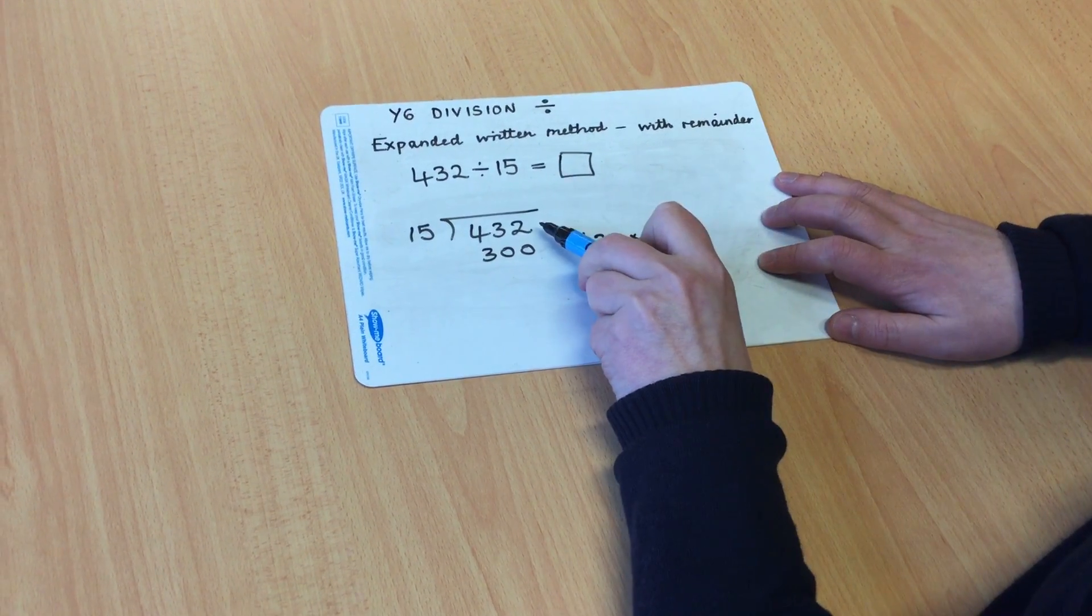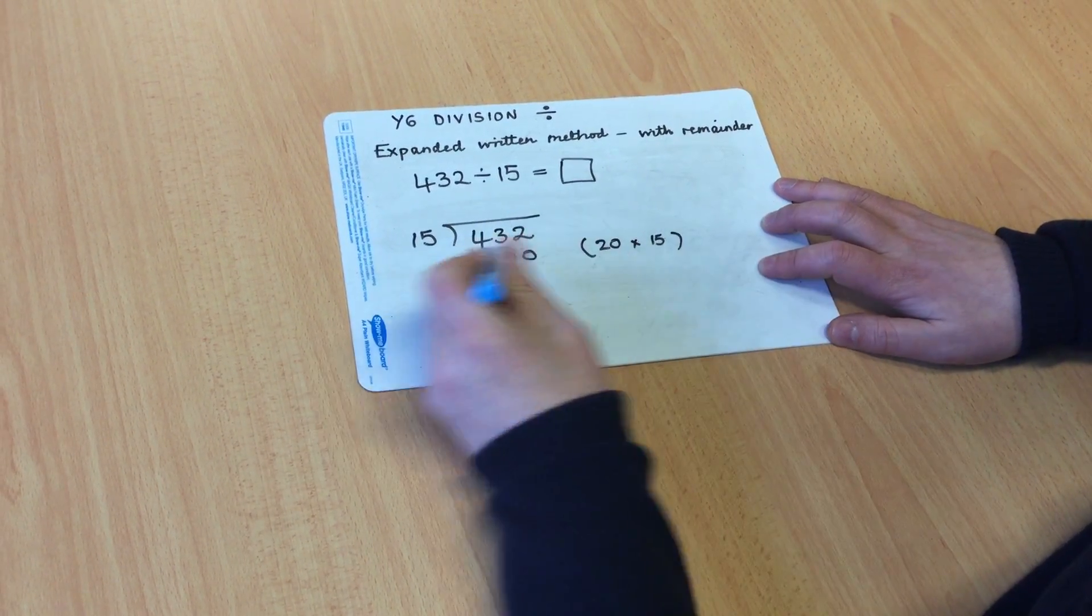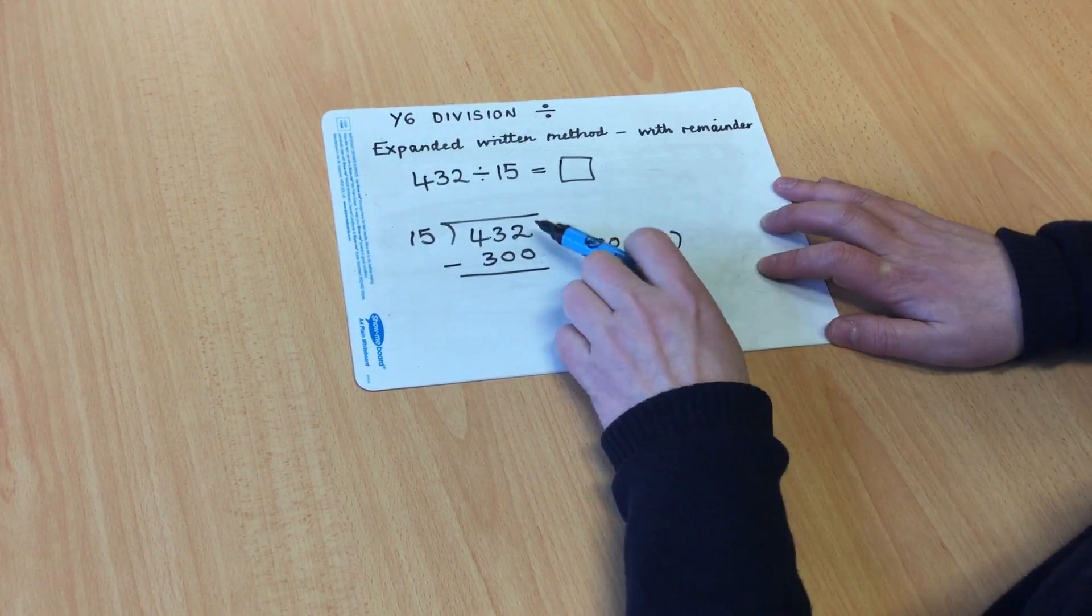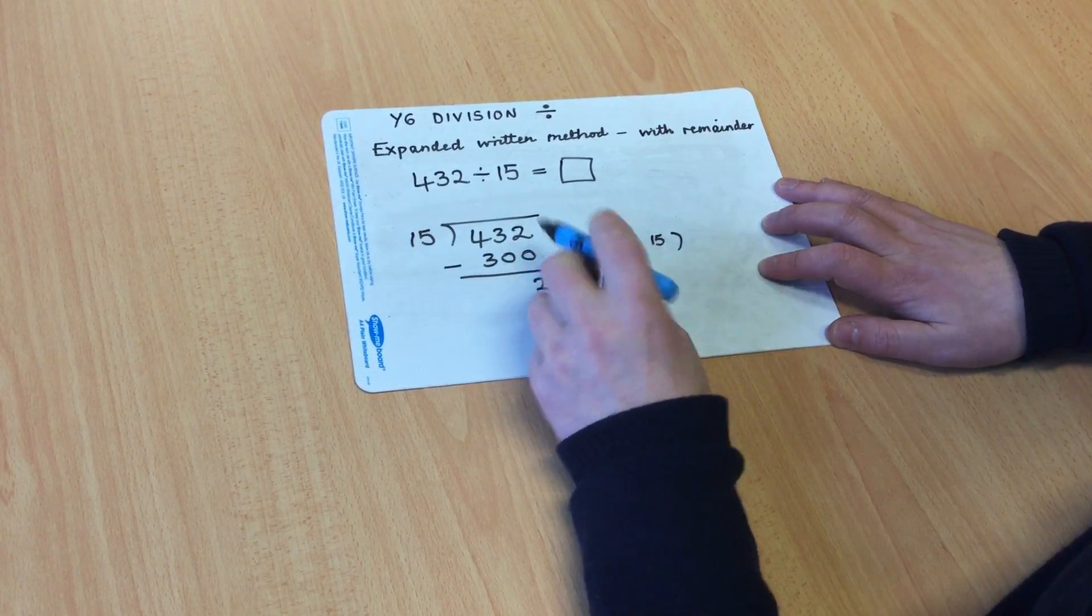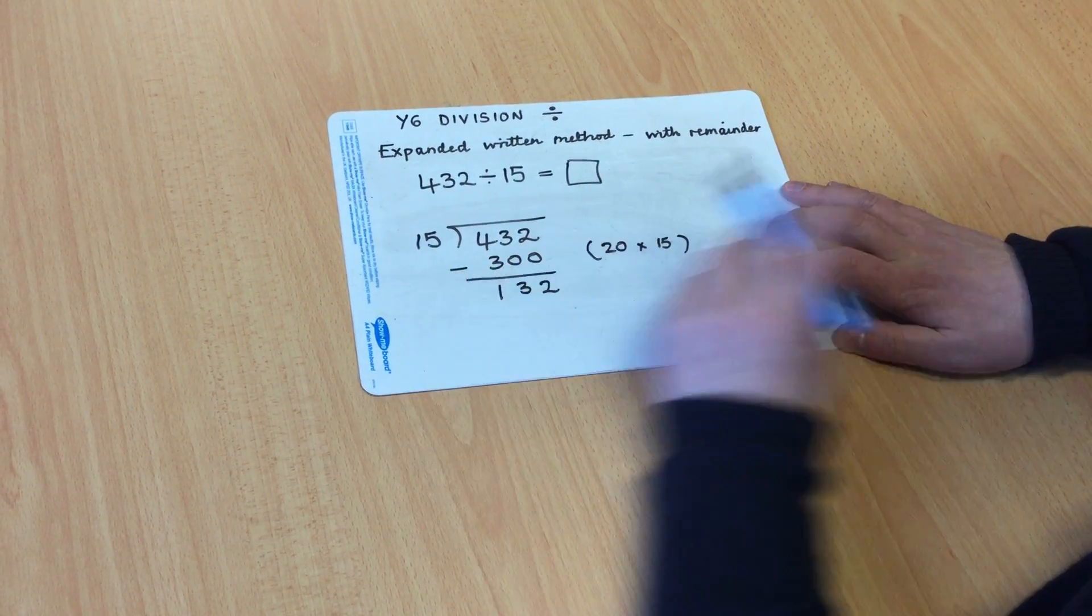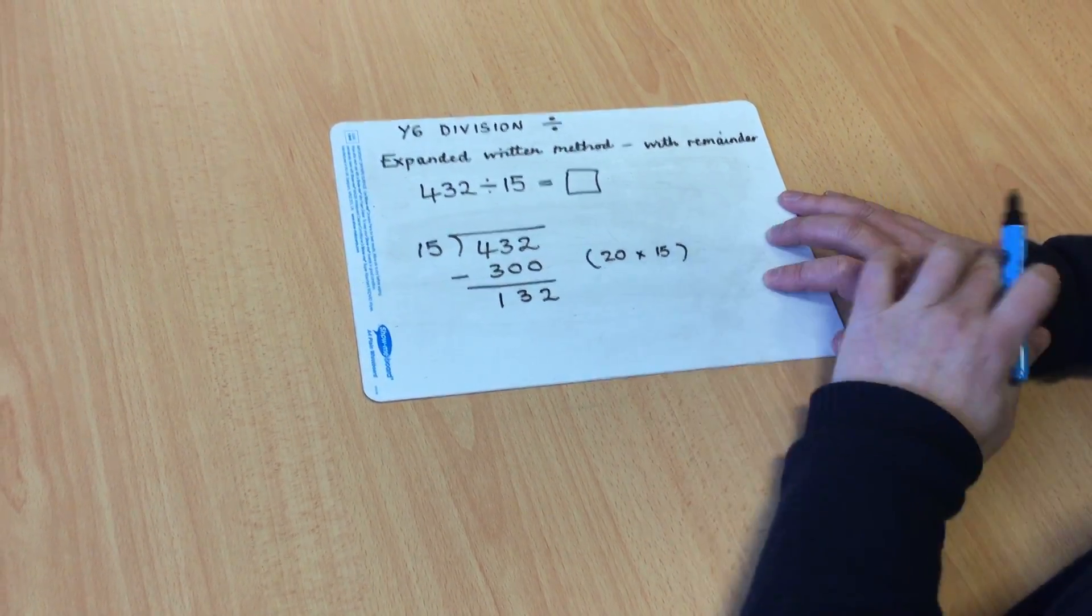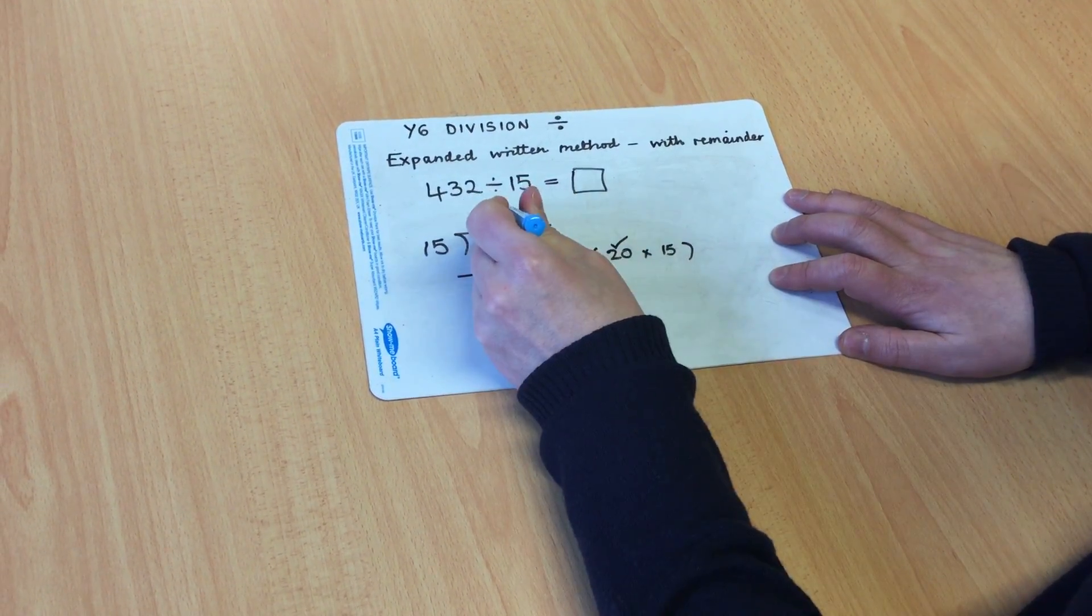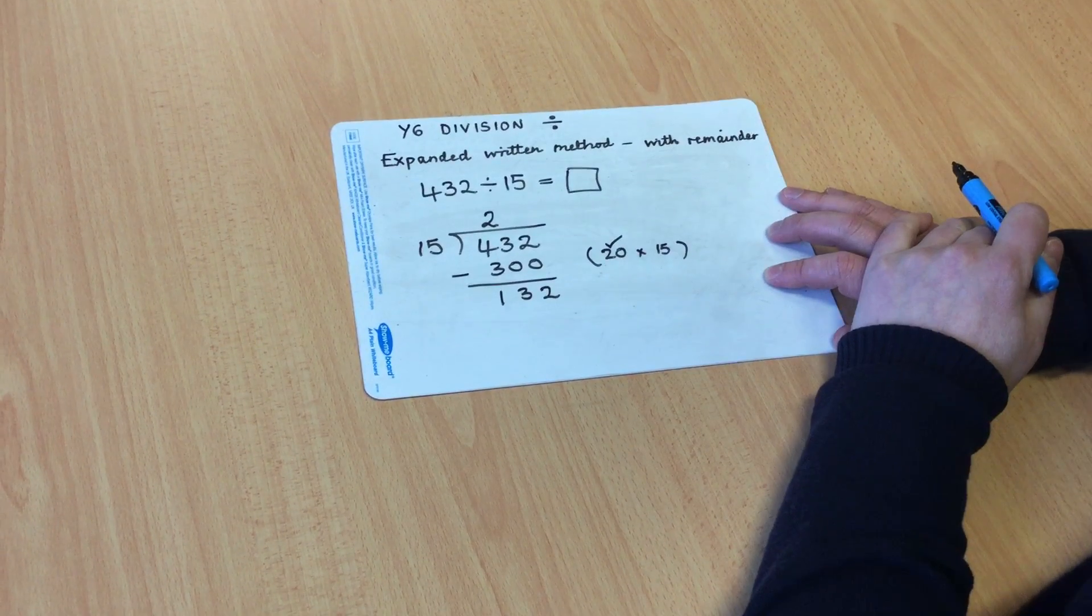Now I'm going to find the difference between 432 and 300 by carrying out a column subtraction. 2 subtract 0 is 2, 3 subtract 0 is 3, and 4 subtract 3 is 1. That confirms I have 20 multiplied by 15. So I'm going to record my 2 in the tens column to denote 20.